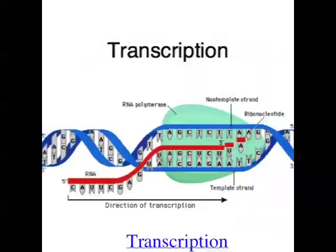In transcription, the genetic instructions are copied from DNA onto RNA. And while both DNA and RNA are examples of nucleic acids, they're a little bit different. The biggest difference is that DNA has four bases: adenine, cytosine, guanine, and thymine. RNA also has four bases: adenine, cytosine, guanine, and uracil. So RNA has a base called uracil instead of thymine, and its abbreviation is U instead of T.